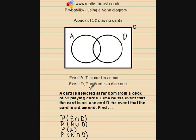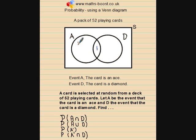We'll populate the Venn diagram with the number of outcomes associated with each space, and it's always best to start from the middle out. The middle represents outcomes that are both an Ace and a Diamond. There's only one outcome associated with this — the Ace of Diamonds. Moving to the full event A curve: there are four outcomes, we've used one, so the balance is three.